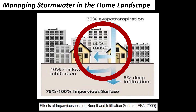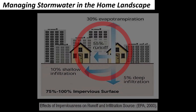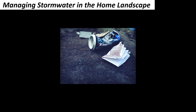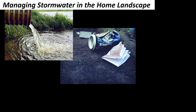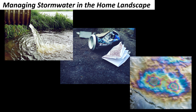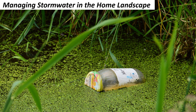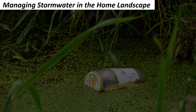As stormwater runoff flows over hard surfaces, it can pick up pollutants such as litter and trash, fertilizer and pesticides, sediment, and fluids left behind by leaking vehicles. Polluted runoff that enters storm drains receives no treatment, so pollutants are then carried and deposited directly into the nearest water body.